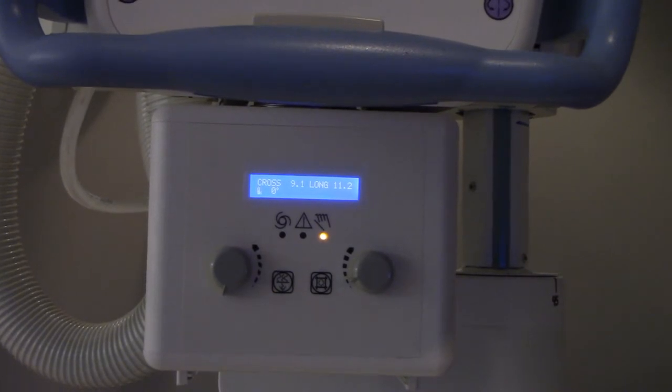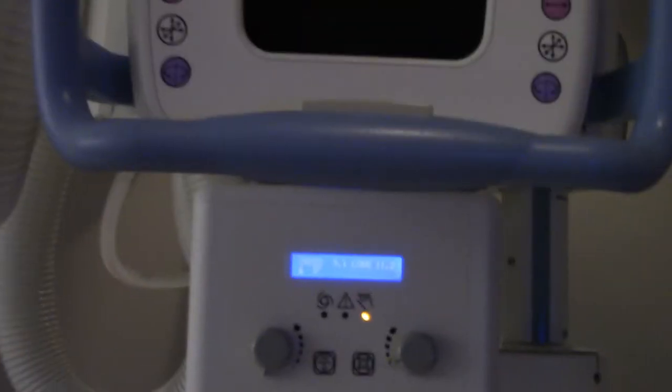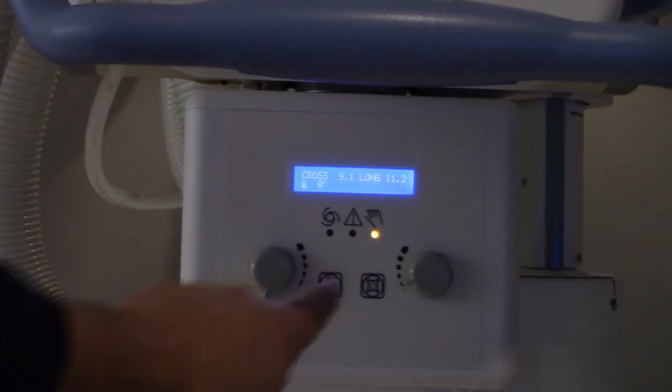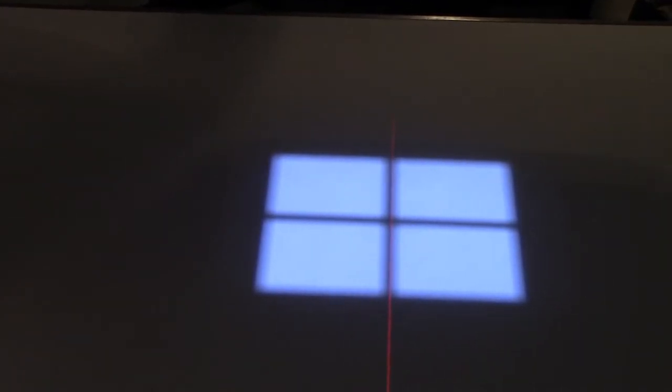I'm going to turn on my light. This is my positioning aid light. As you can see, it casts a light rectangle down on the table. It also comes complete with this red alignment beam. What that allows me to do is line up my bucky tray with my light field.